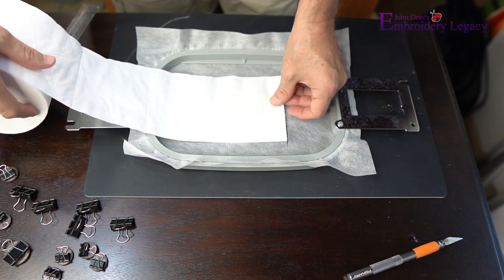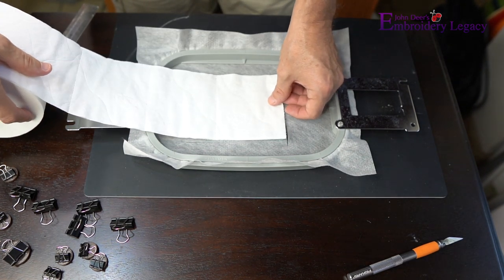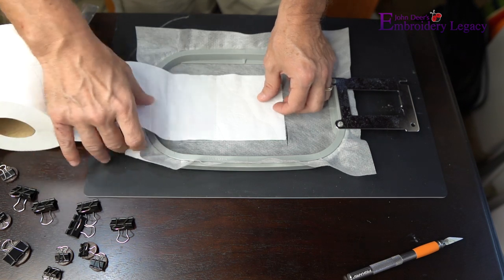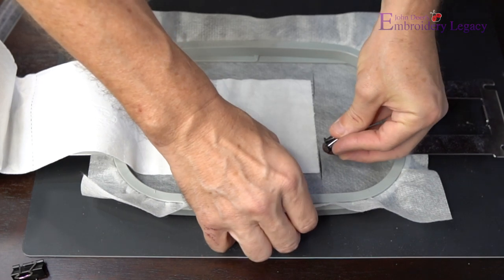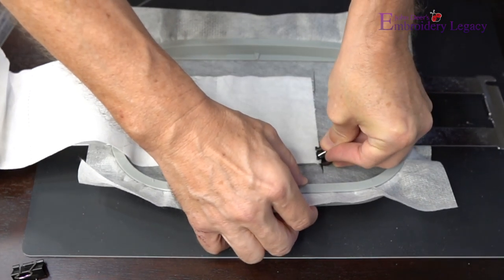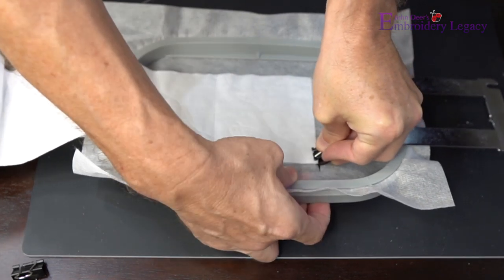Once you're finished cutting the four slits, you're going to take your toilet paper and line it up to the placement guide stitches. Once it's lined up, you're going to very carefully take the clips that we created and slide the felt piece underneath the slit, leaving the top binder clamp on top.